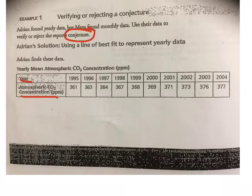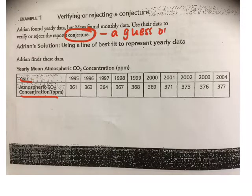What is their conjecture? Jasmine, can you read us the definition? A conjecture is a guess or prediction based on limited evidence.